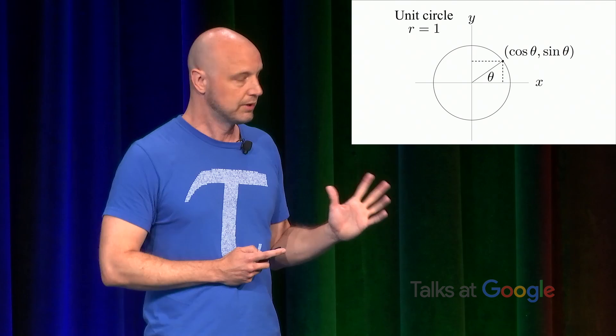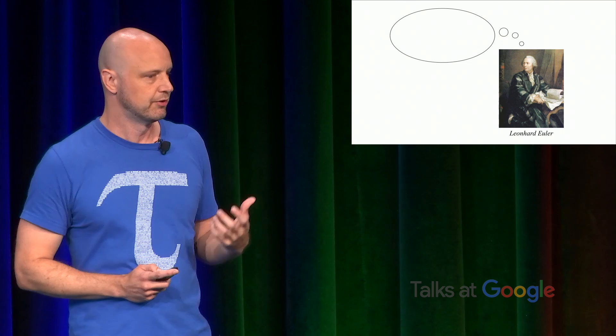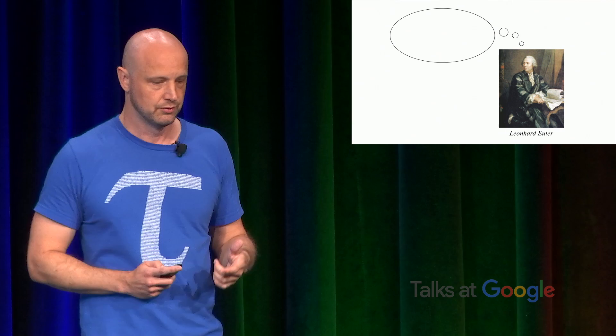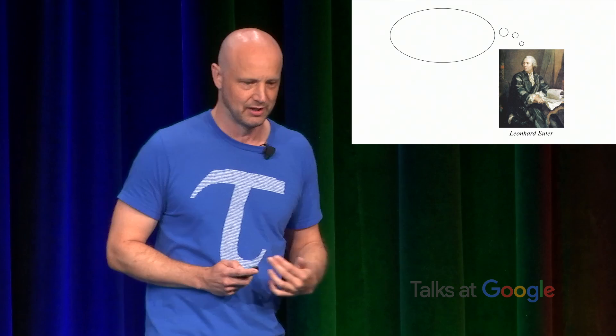Now, Leonard Euler proved an important formula, important theorem based on these circle functions, relating complex exponentiation to cosine and sine. Now, Euler was one of the great mathematicians of all time. And so you can bet that if something is called Euler's formula, it must be pretty important because he proved a lot of formulas. So here it is. E to the i theta equals cosine theta plus i sine theta. So this relates complex exponentiation to the circle functions.